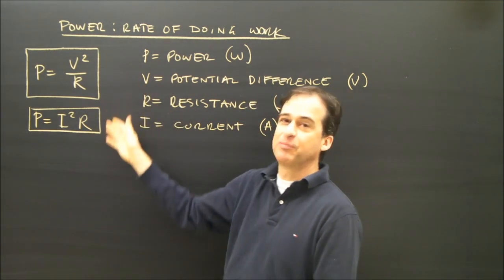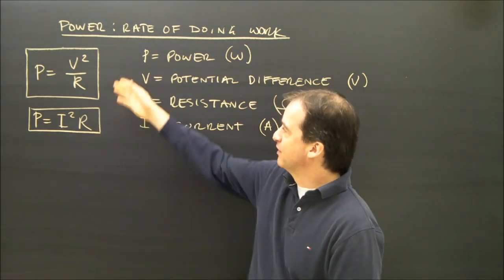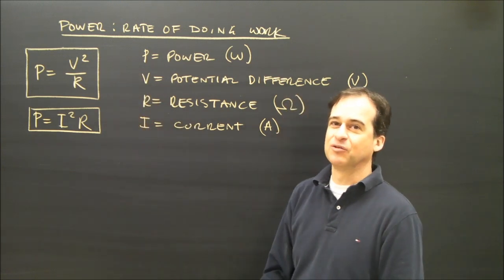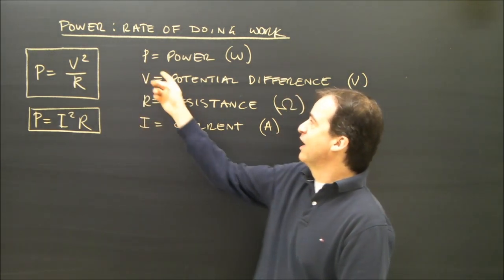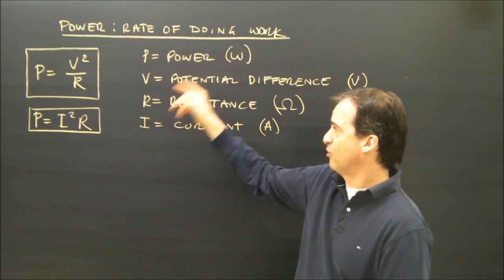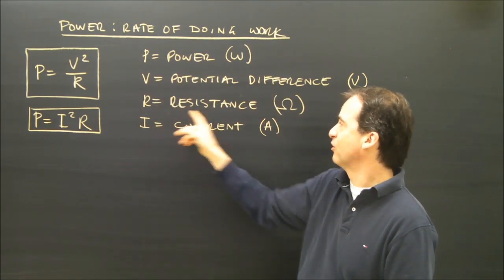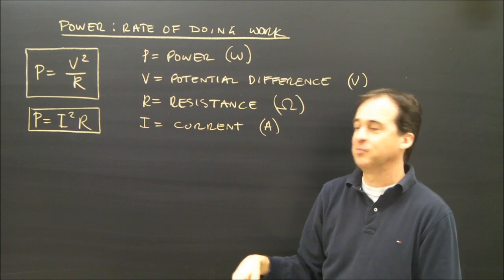So there are two more formulas for power that you may or may not use. But these are two that you can add to the list of the ones for the videos. And in these ones we've got P is power in watts. V is potential difference in volts. R is resistance in ohms. And I is current in amperes.